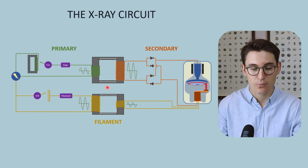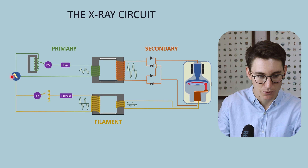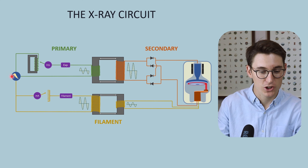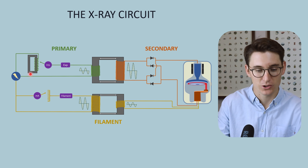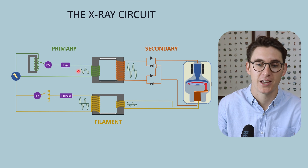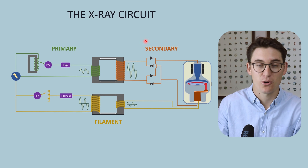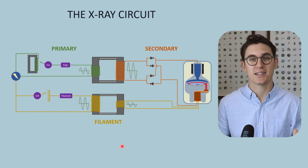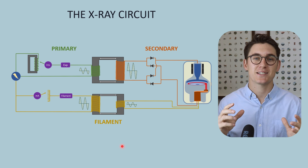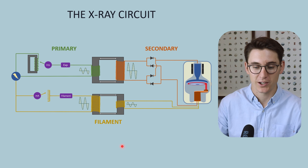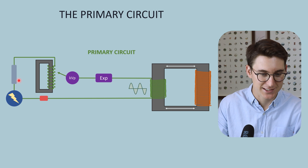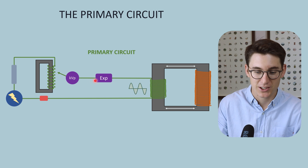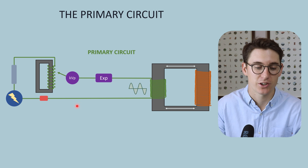Here is our primary x-ray circuit. Our hospital supply is represented by this lightning bolt — the 220-volt alternating voltage coming into the primary circuit. This is the most simple I can make the x-ray circuit while still maintaining the detail required for your understanding. Let's examine the various components that the current comes into contact with in this circuit.